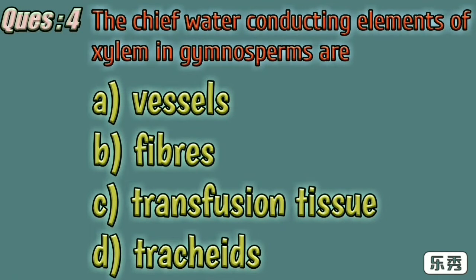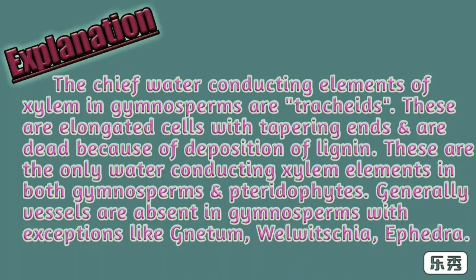Fourth one. The chief water conducting elements of xylem in gymnosperms are: A) vessels, B) fibres, C) transfusion tissue, D) tracheids. Here D, tracheids, is the right answer. The chief water conducting elements of xylem in gymnosperms are tracheids. These are elongated cells with tapering ends and are dead because of deposition of lignin. These are the only water conducting xylem elements in both gymnosperms and pteridophytes.